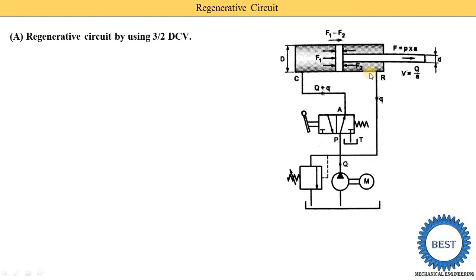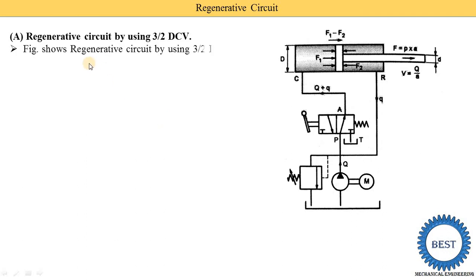Oil coming out from the pump is capital Q, and oil coming out from the rod end port is small q. Both are mixed and supplied to the P port and A port, so it is written as capital Q plus small q. The bore diameter D and rod diameter d are labeled. Velocity equals Q divided by small a, and force equals P times A. Force on one side is F1 and on the other side is F2, so net force is F1 minus F2 because both forces are in opposite directions.